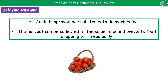The third use is for delaying the ripening of fruit. We can actually spray fruit trees with auxin to delay the ripening process. The whole reason for doing this is that it means we can collect the entire harvest at the same time, and it also means that fruit won't drop off the trees early and risk becoming spoiled.